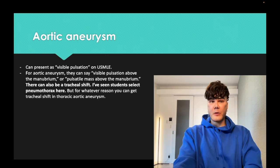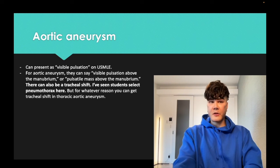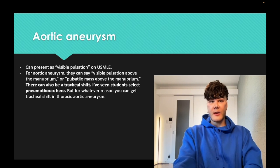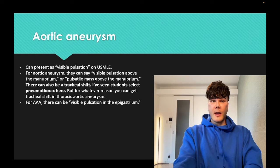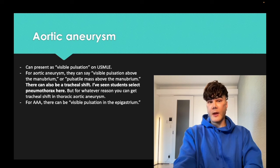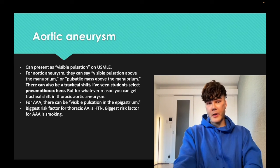Aortic aneurysm can present as a visible pulsation on USMLE. If it's thoracic, they can say a visible pulsation or pulsatile mass above the manubrium — it can also cause tracheal shift, so don't assume pneumothorax. For AAA, it's a visible pulsation or pulsatile mass in the epigastrium. The biggest risk factor for thoracic aortic aneurysm is hypertension; the biggest risk factor for AAA is smoking.